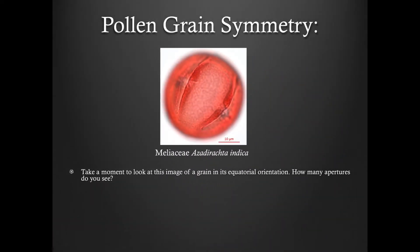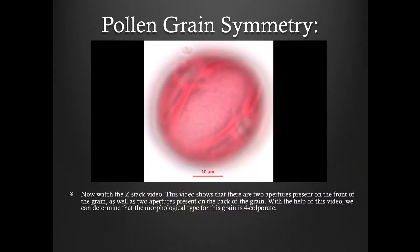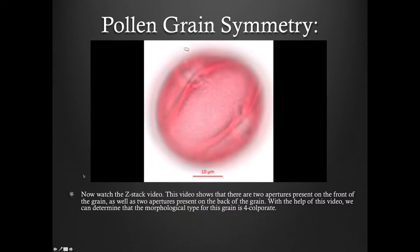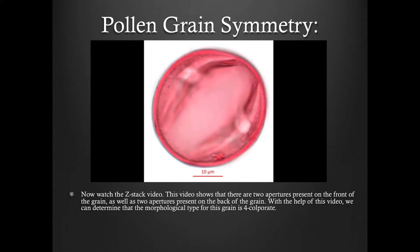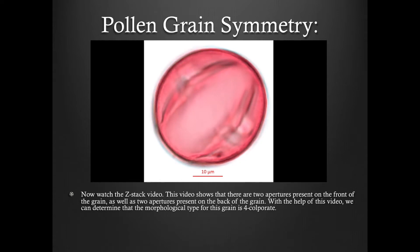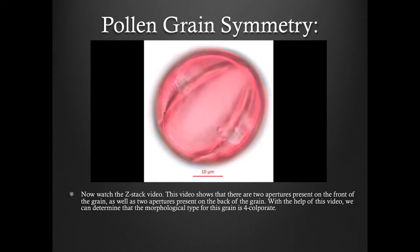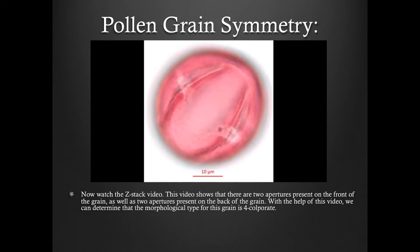Take a moment to look at this image of a grain in its equatorial orientation. How many apertures do you see? Now watch the ZStack video. This video shows that there are two apertures present on the front of the grain, as well as two apertures present on the back of the grain. With the help of this video, we can determine that the morphological type for this grain is 4-colporate.